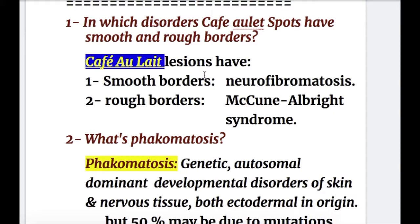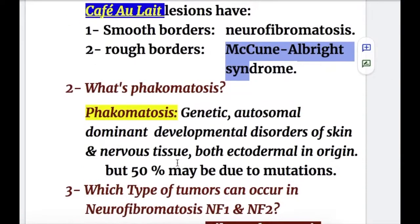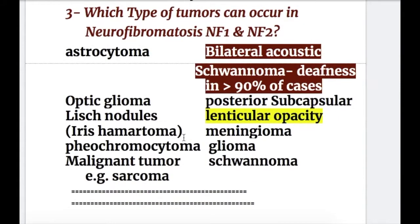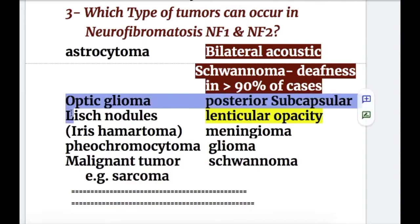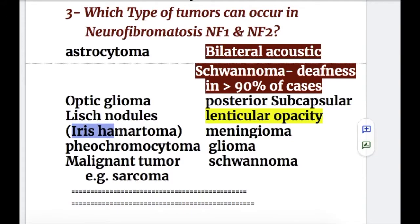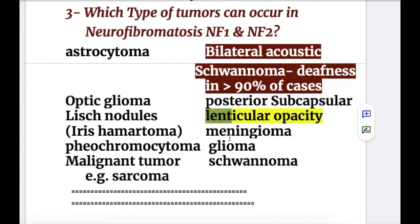Now, answers to the exam questions. In which disorder do café-au-lait spots have smooth or rough borders? Smooth borders occur in neurofibromatosis and rough borders in McCune-Albright syndrome. Regarding tumors in NF1 and NF2: NF1 may present with optic glioma, Lisch nodules or iris hamartomas, pheochromocytoma, and malignant sarcoma. NF2 may present with bilateral acoustic schwannomas causing bilateral deafness, and posterior subcapsular lenticular opacity.